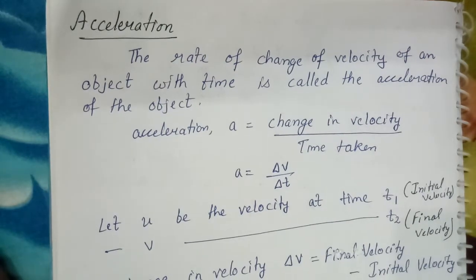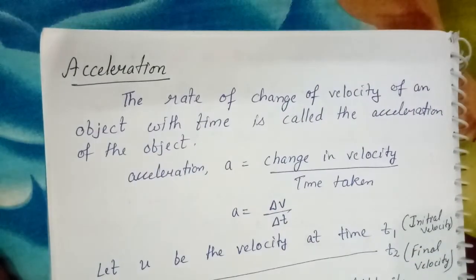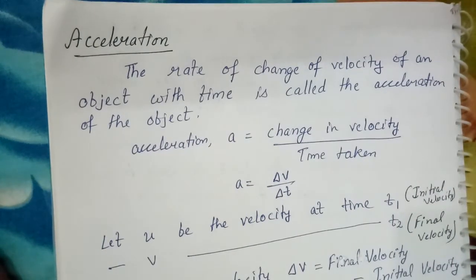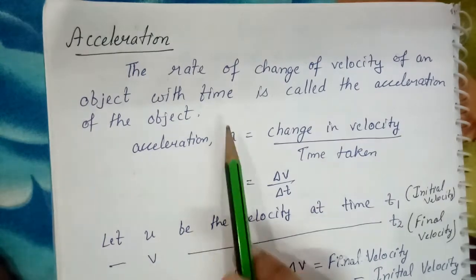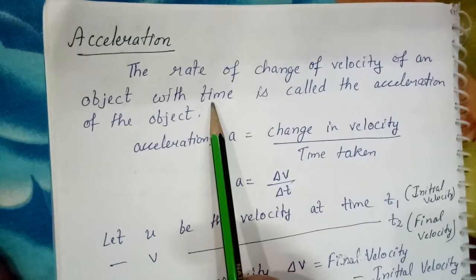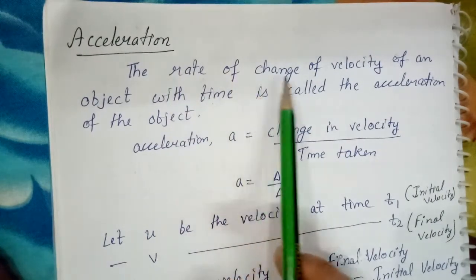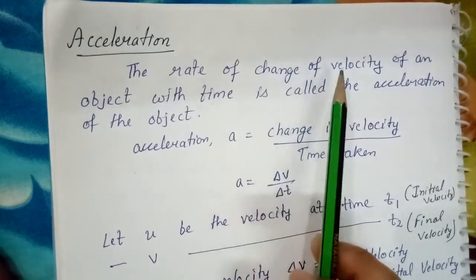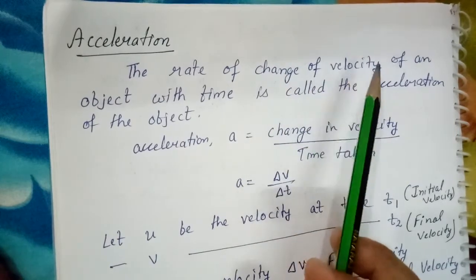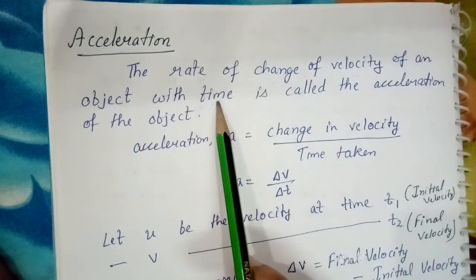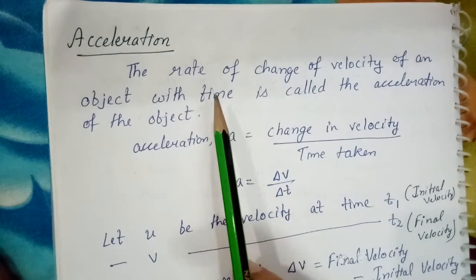Today we will discuss the next variable, that is acceleration, which helps us to describe the motion of a body. Acceleration is the rate of change of velocity of an object with time. Rate of change of velocity means the velocity that is changing, and the rate is taken with respect to time.